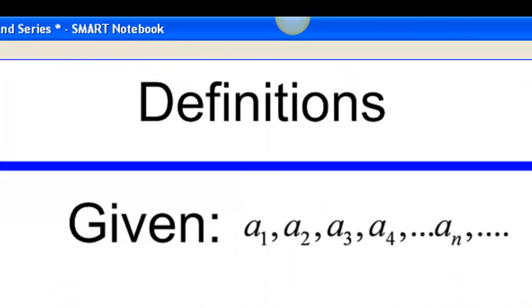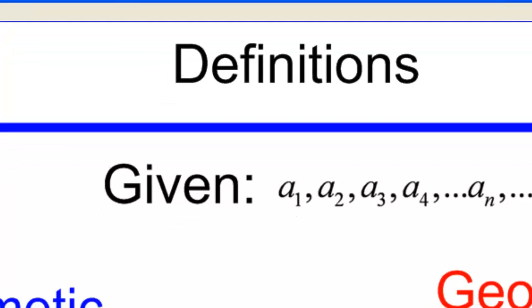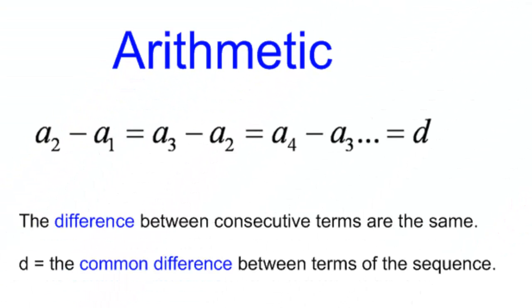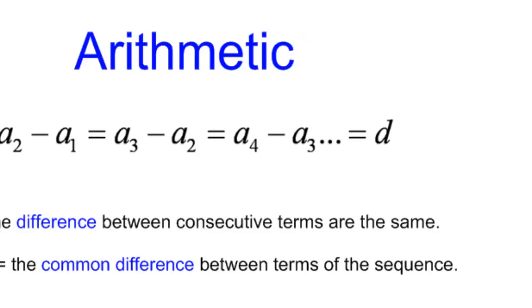So if we look at the basic definitions, if I give you a sequence where I give you a first term, a second term, a third term, all the way down to an nth term and so on, it is arithmetic if you take the second term minus the first term, and then the third term minus the second, the fourth term minus the third, and so on. You get a difference between the consecutive terms. So d is your common difference between the terms of a sequence, or another way of thinking about it is you take a term and you add the same number to the previous term to keep going in the sequence.